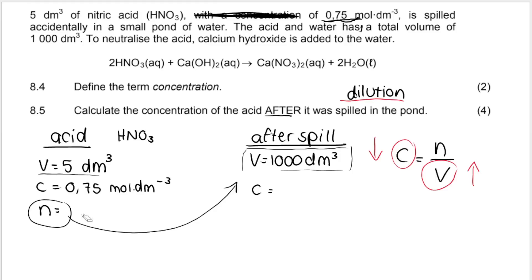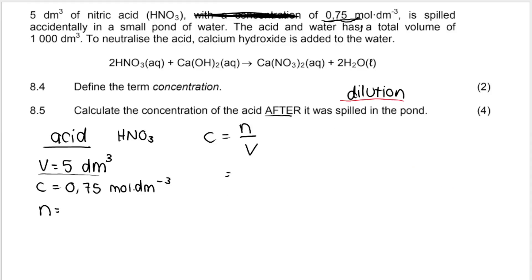So there's two ways to do this. The one way is that we can first work out the number of moles of the acid before we spill it. So we can go, here's my information. We can go C is equal to N over V. My concentration is 0.75. My N is what I'm looking for and my volume is 5. Then we get the number of moles of acid, 3.75 mole. Now remember in a dilution question, the number of moles does not change. We change the volume, which changes the concentration, but the number of moles does not change.